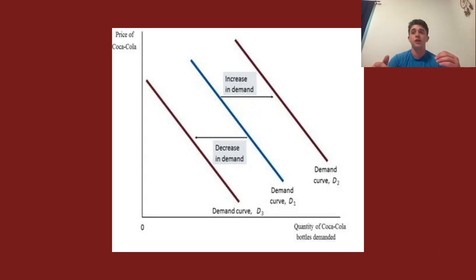The price of, the income of consumers goes up, we can see that the demand curve would shift to that rightward one versus if it went down, we could see it shift to the leftward one.